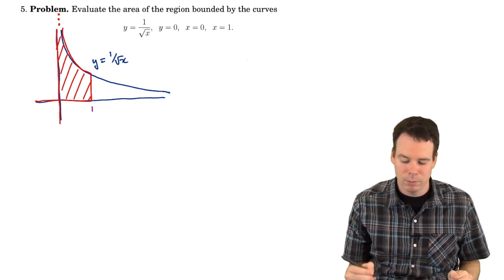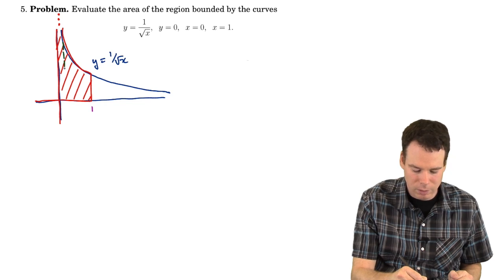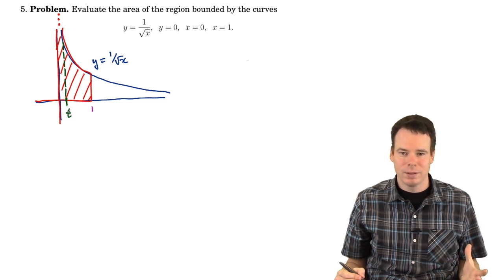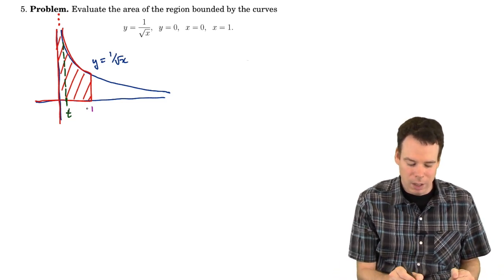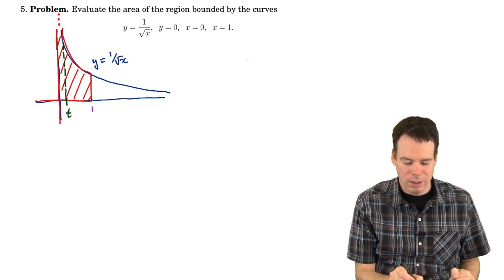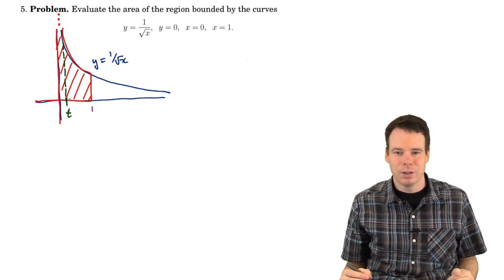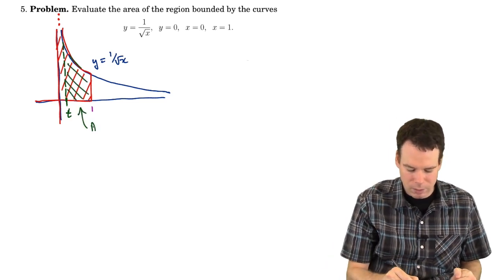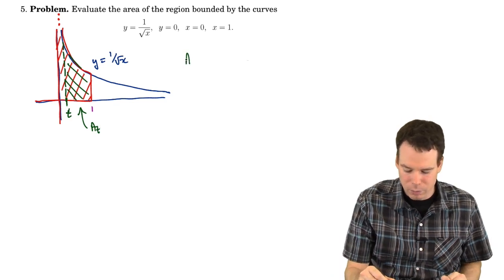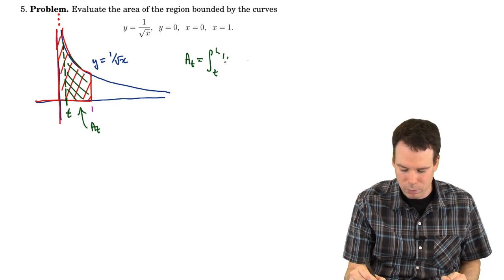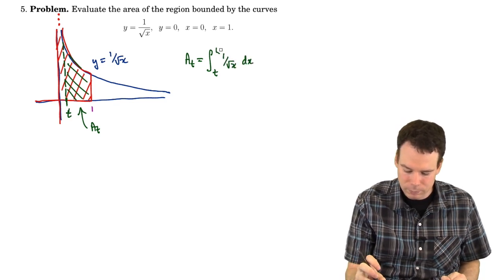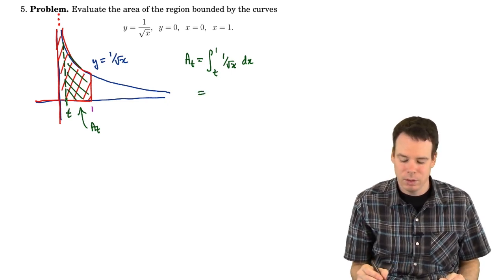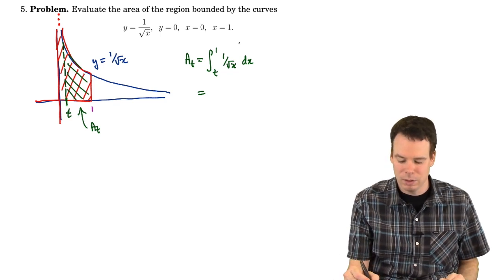So how do we get around this problem? Well, the way we get around it is exactly how we got around the problem with integrating to infinity. We introduce a stopping point somewhere short of the ultimate destination we want to get to. I want to go from 1 all the way back to 0, but instead I go from 1 all the way back to t, where t is just a little bit to the right of 0, and I work out the value of this area, A(t). A(t) is the integral from t to 1 of 1 over root x dx. There's no problem working out this integral because t is a number slightly bigger than 0, so the function is continuous at t and all the way through to 1.